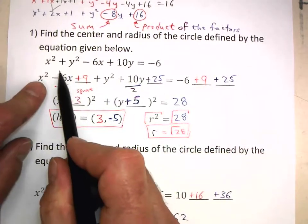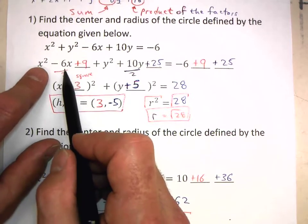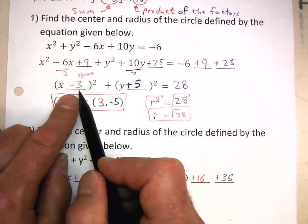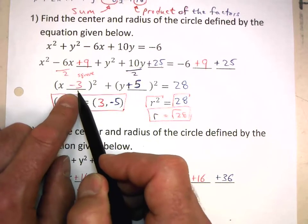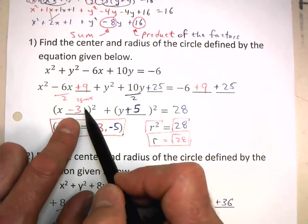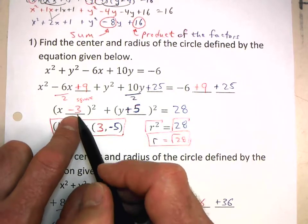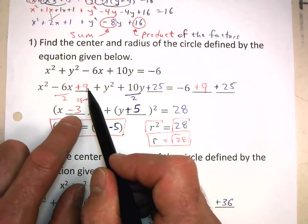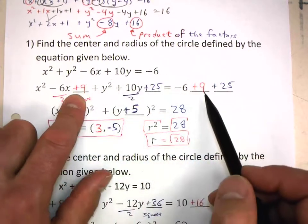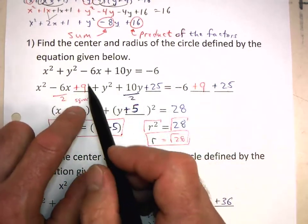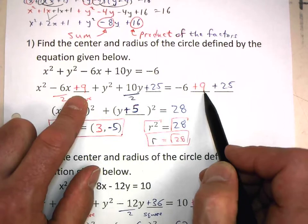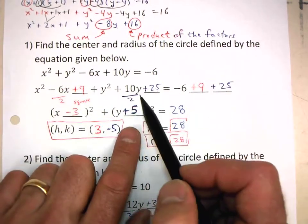Now, because the second term is the sum of the factors, I take that second term and divide it by 2, and that gives us our factor. So negative 6 divided by 2 gives you negative 3. And because the third term is the product of the factors, I take this negative 3 and square it. Negative 3 times negative 3 is positive 9 — negative times a negative is a positive. Since I added a positive 9 to the left, make sure you also add a positive 9 to the right. The same principle — also use that for your y terms.